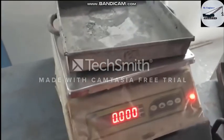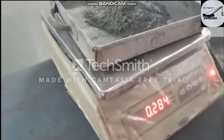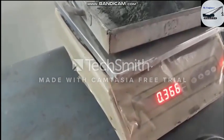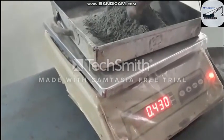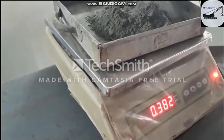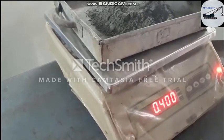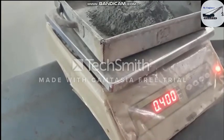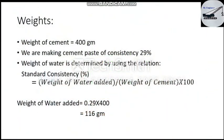First, set the reading of the scale to zero and put 53 grade OPC cement weighing 400 grams. OPC means ordinary portland cement, which has three grades: 33, 43, and 53 grade. Here we are using 53 grade for finding the consistency test. Now we will calculate the water amount to be added to make a cement paste of standard consistency.